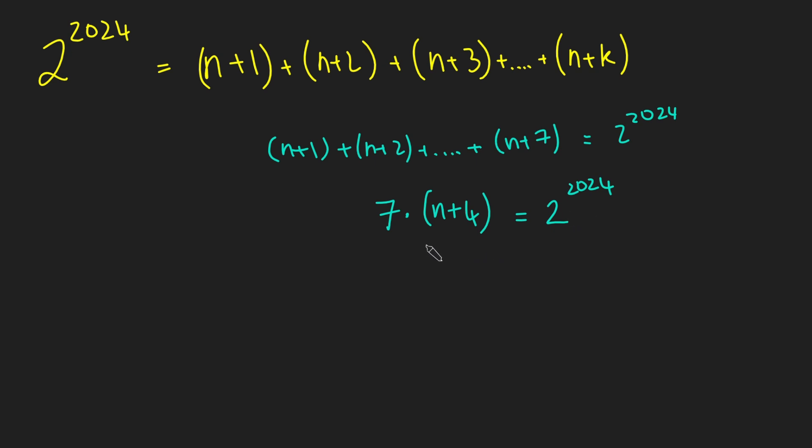But what's the issue with this? Well, this left-hand side here is a multiple of 7, and this clearly isn't a multiple of 7, and so we get a big contradiction here.